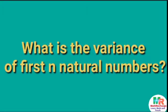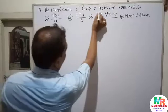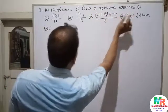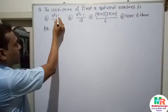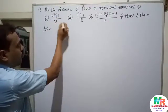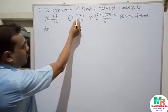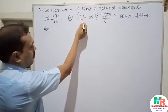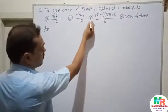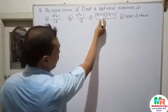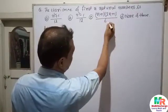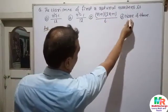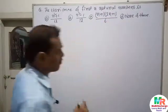The question is: the variance of first n natural numbers is — option A: (n squared + 1) / 12, option B: (n squared - 1) / 12, option C: (n + 1)(2n + 1) / 6, and option D: none of these.